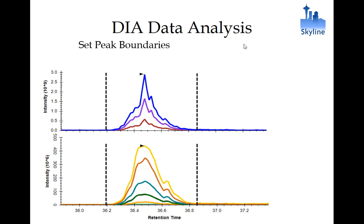Regarding whether the isolation window is always the same: in what I've shown so far, yes, it's exactly the same. But our lab actually uses an overlapping windows approach. Each cycle still has 20 scans, and then the next cycle offsets the windows by half the window width. When we do that, it allows us to effectively achieve 10 m/z window selectivity from what are nominally 20 m/z windows.